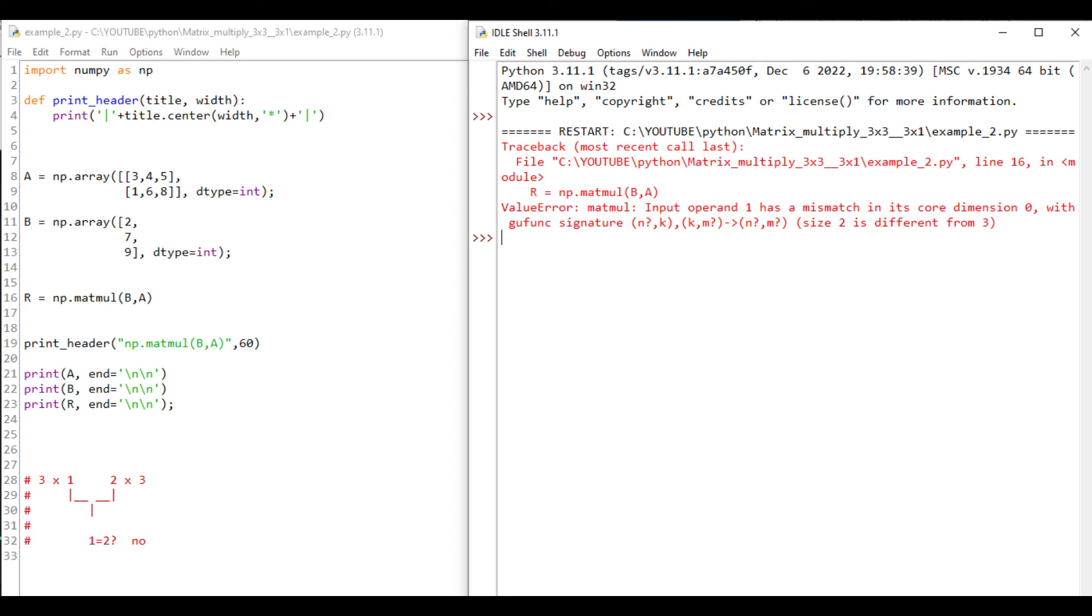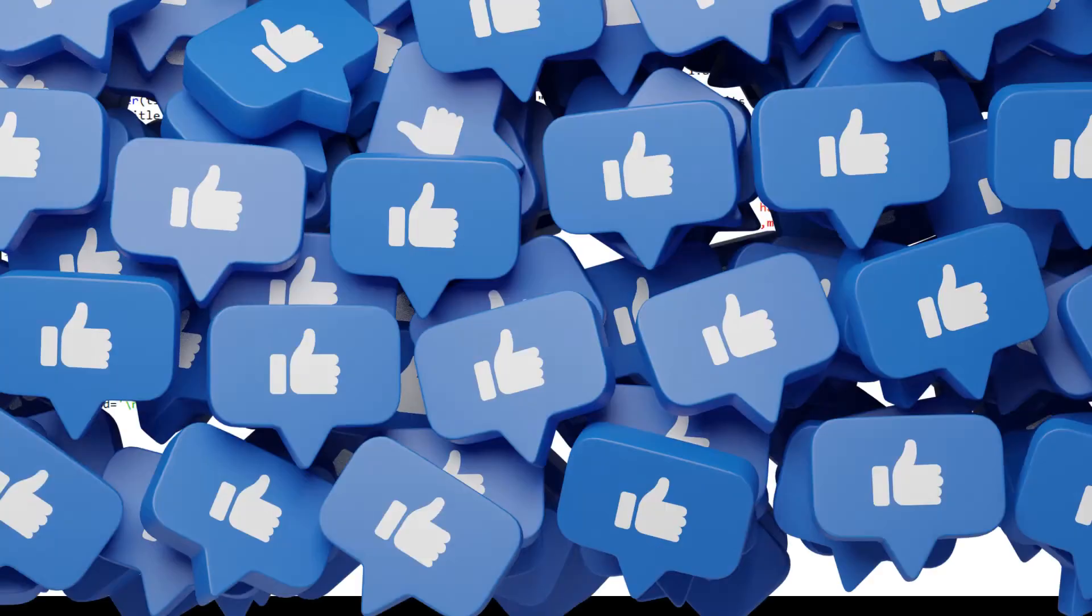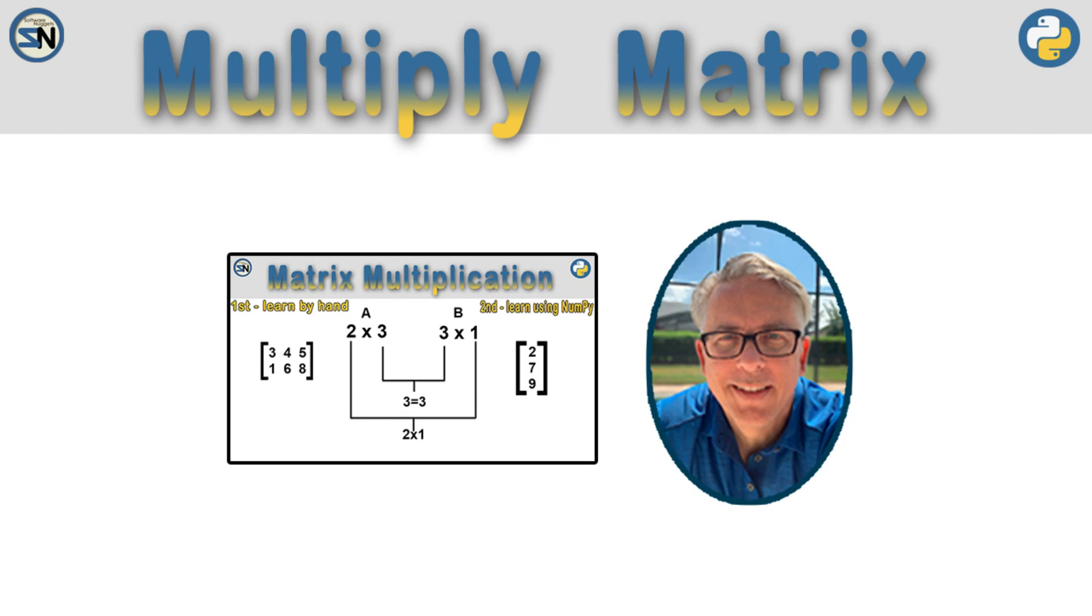And there you have it, team. We learned to ensure two matrices were compatible to be multiplied together. Then we learned to determine the size of the result. Finally, we learned the steps to follow to multiply a 2 by 3 times a 3 by 1.